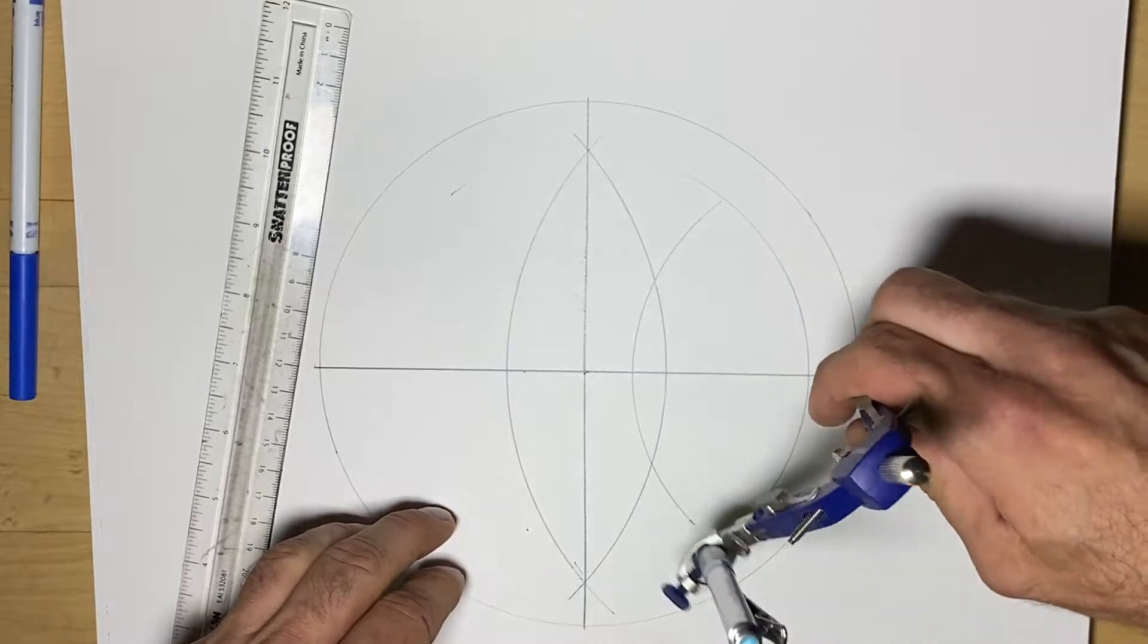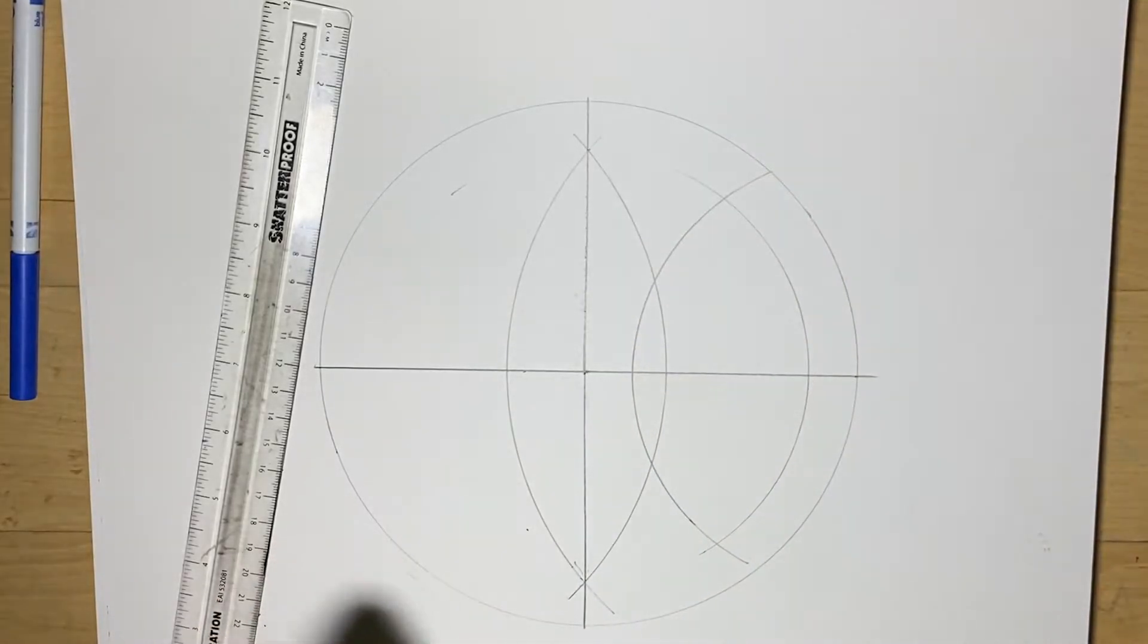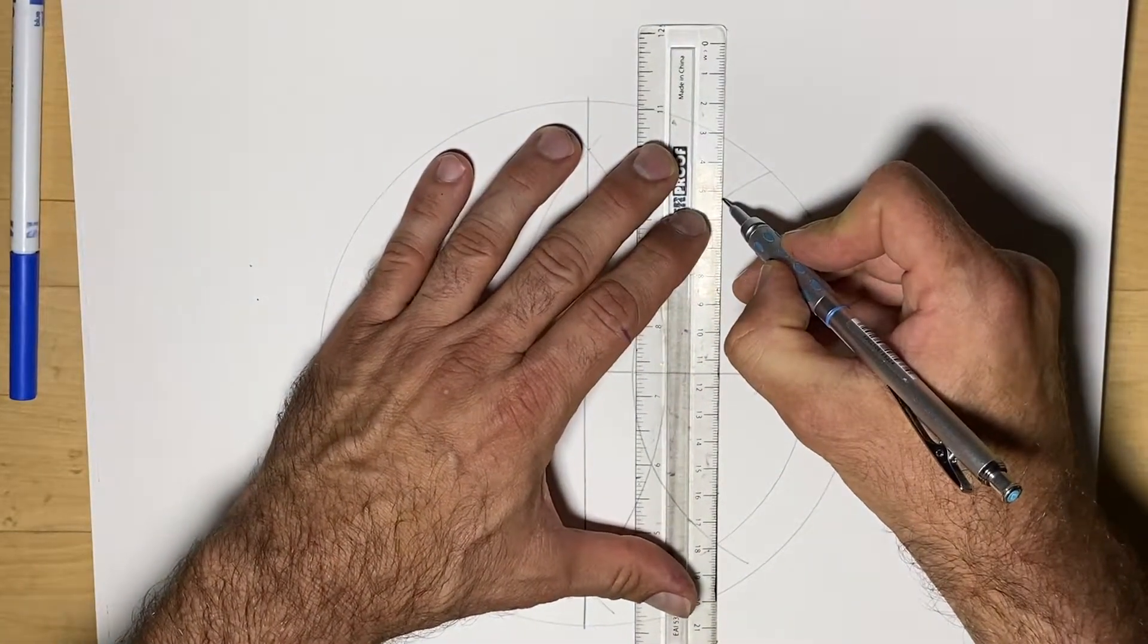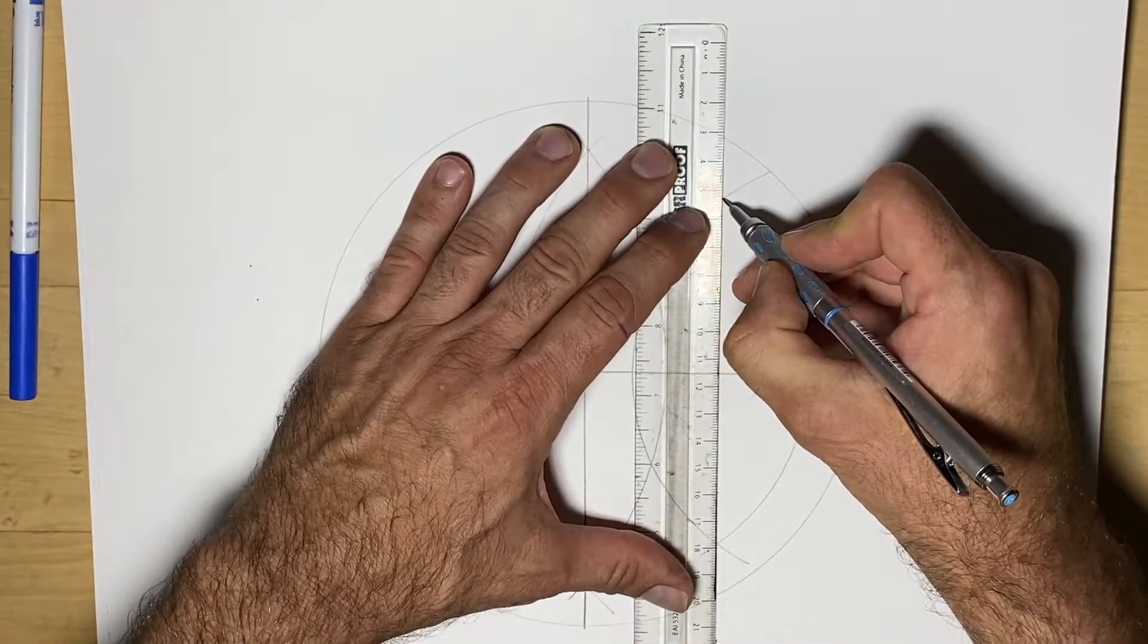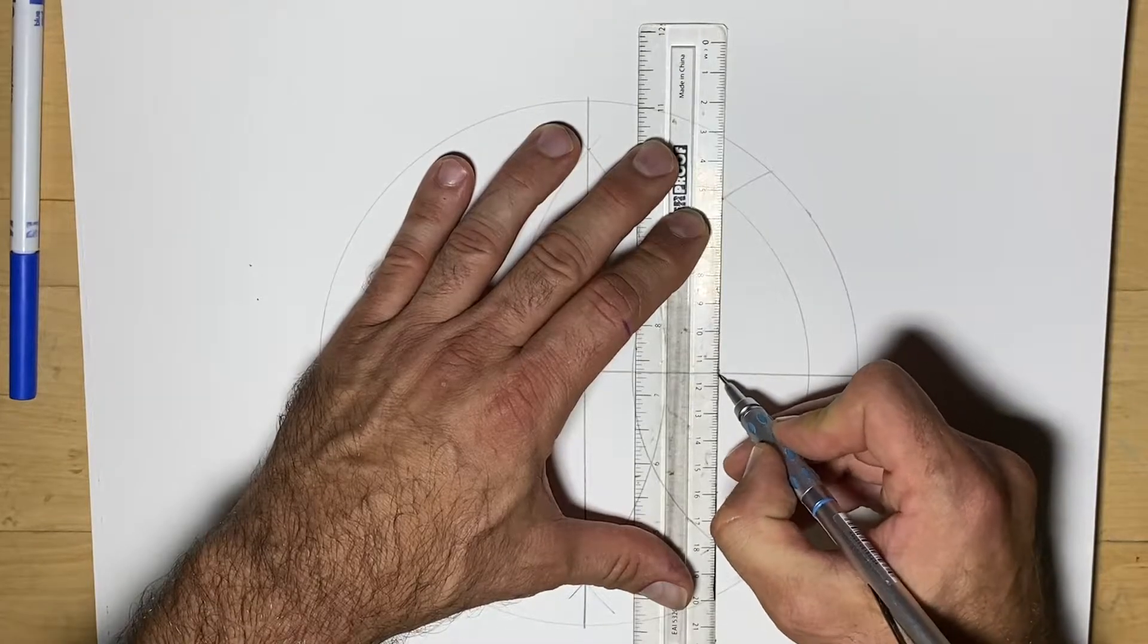Again, I didn't go quite as far as I should have. When we line up our ruler, we don't need to draw the whole line, but we want to find that middle spot here.